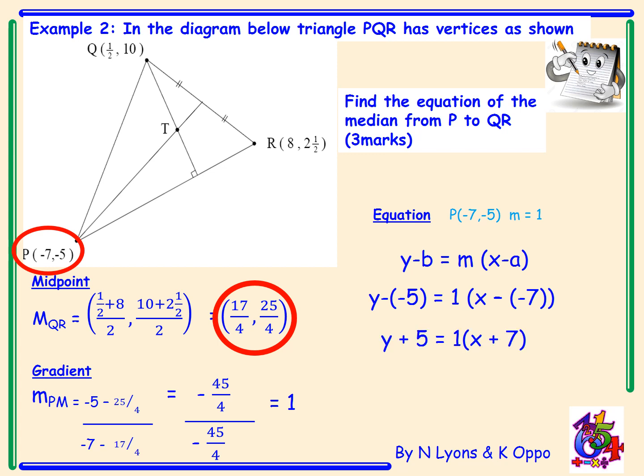Simplifying our double negatives will give us Y plus 5 equals 1 bracket X plus 7. Expand the bracket X plus 7 on the right hand side, and finally rearranging our median's equation to X minus Y equals -2.